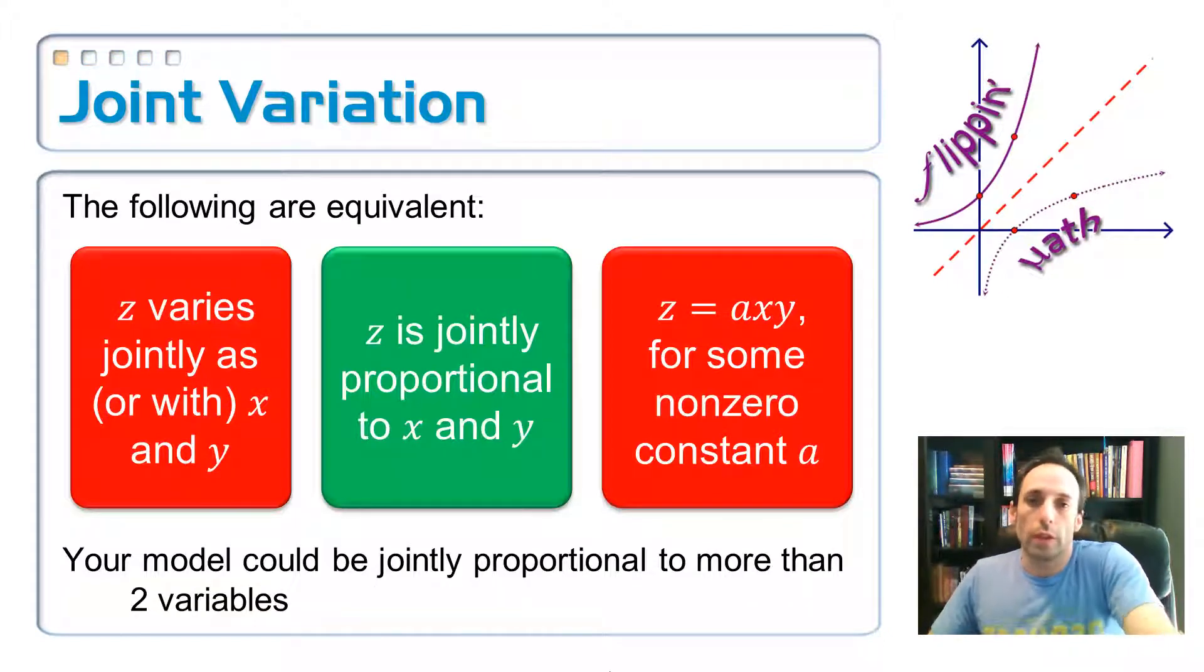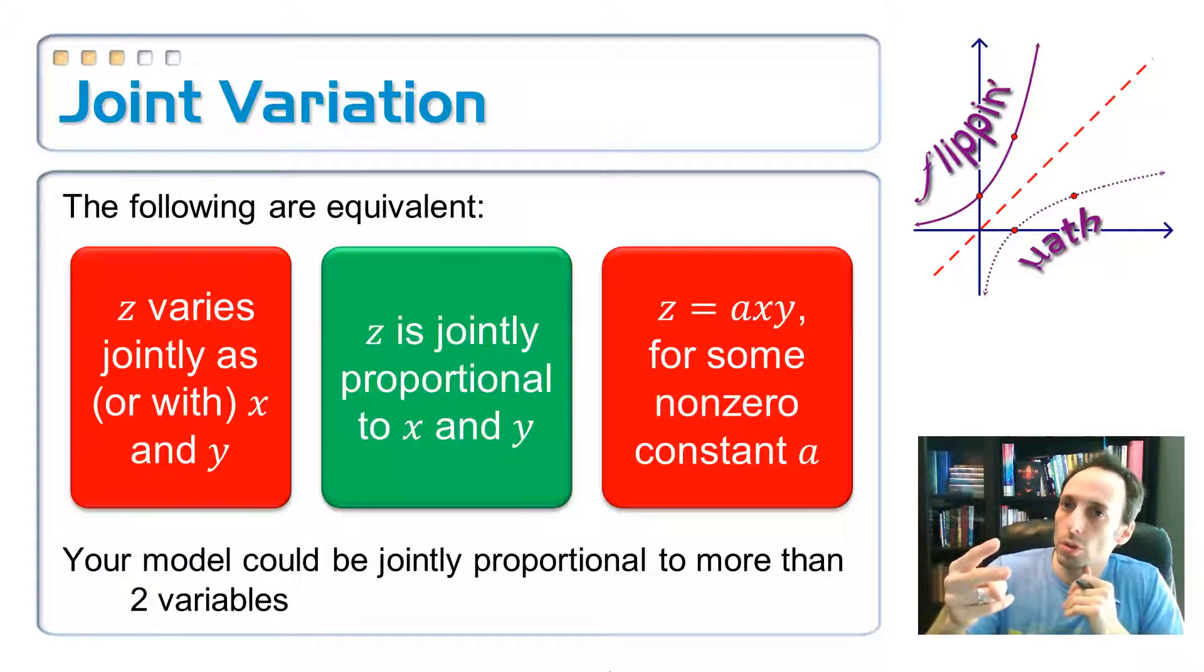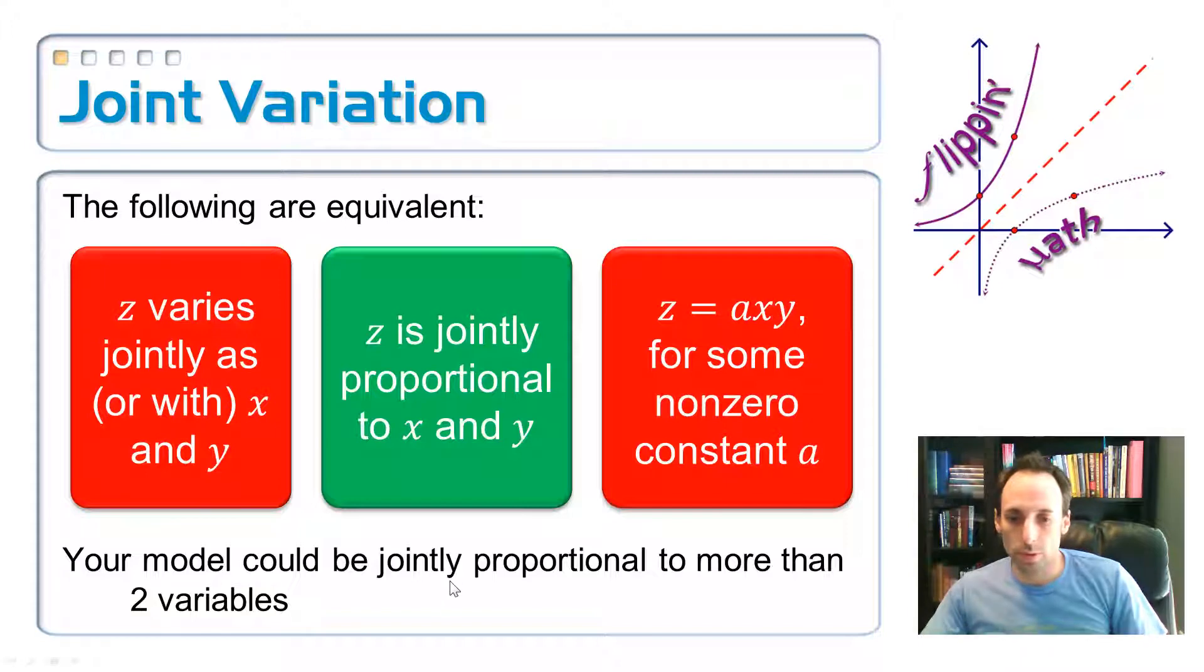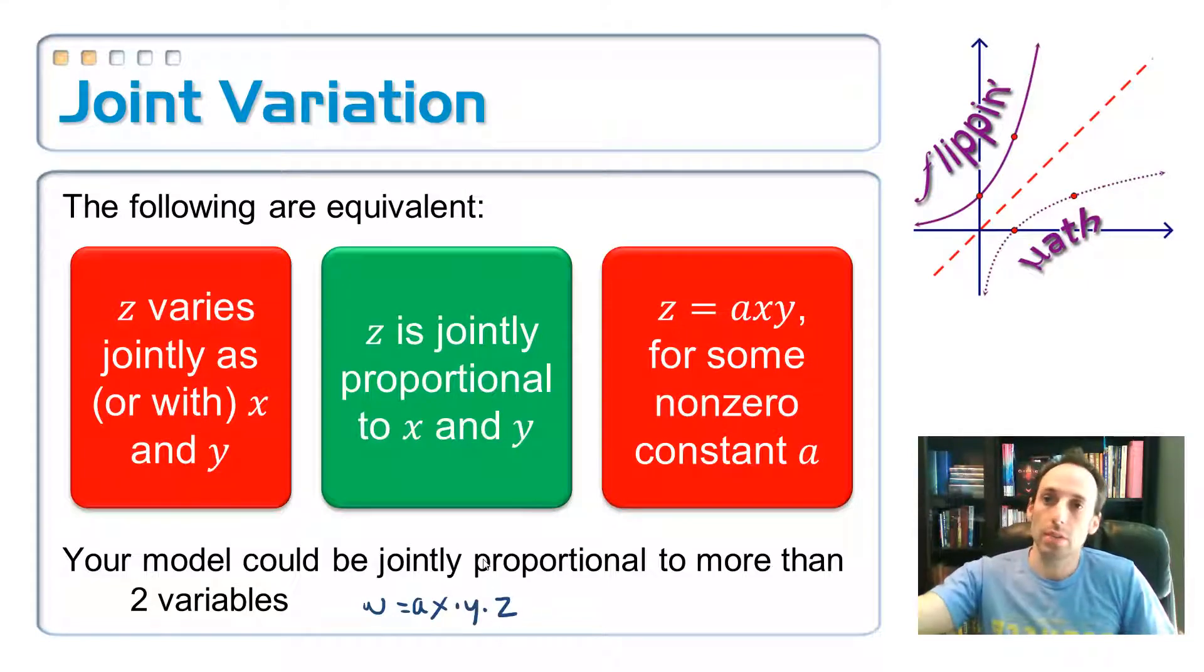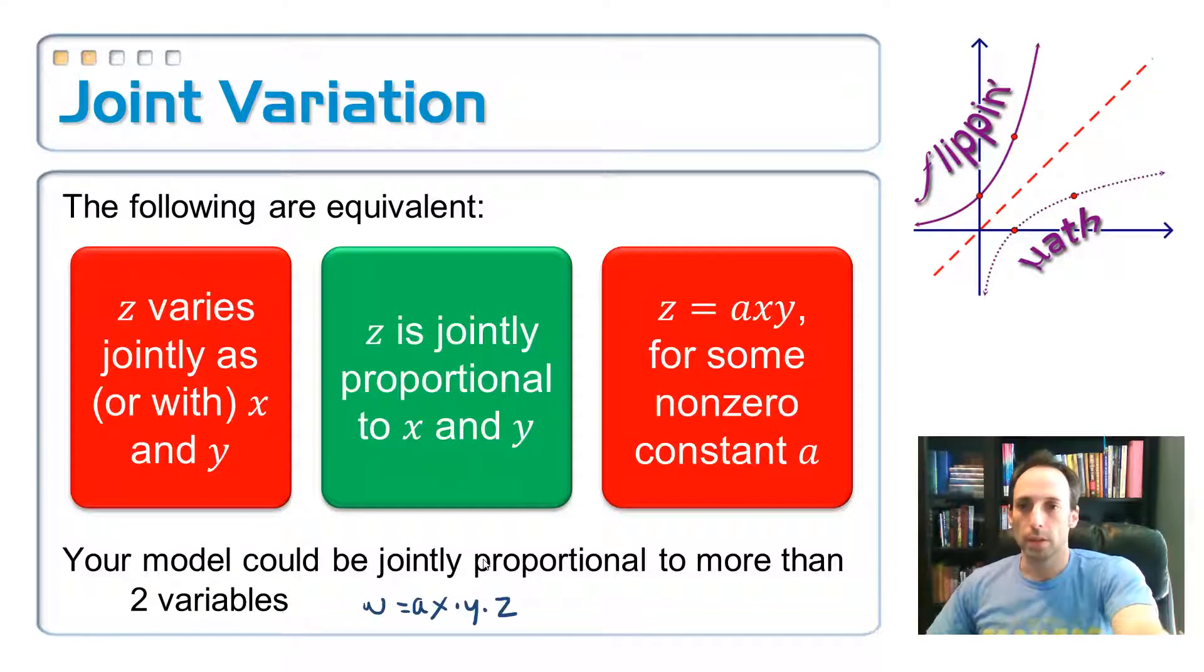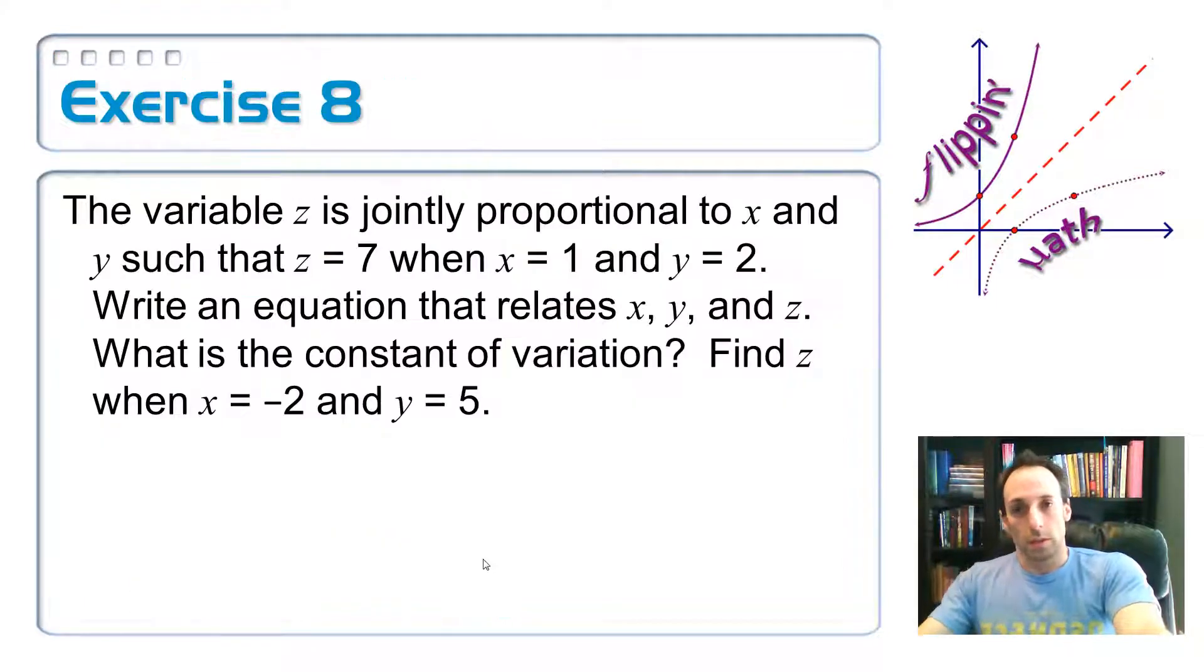And the other thing is, for joint variation, it doesn't have to be just two variables. It can be three other variables. So for example, I could say that w varies jointly with x, y, and z, for example. There you go. All right. So let's apply this one.